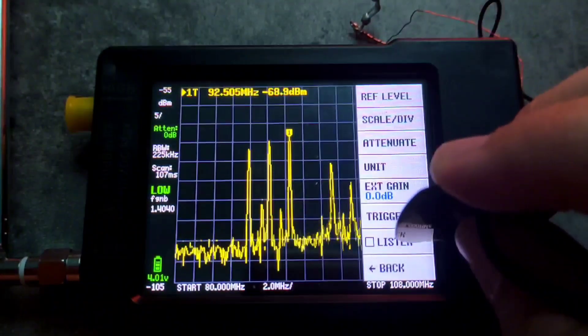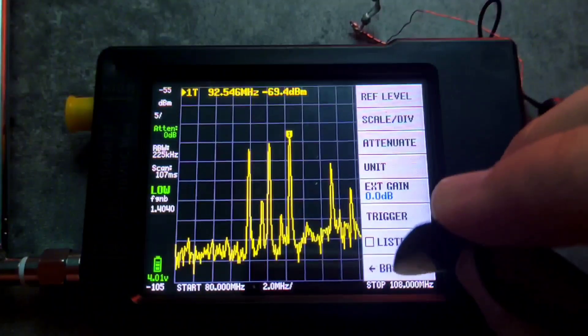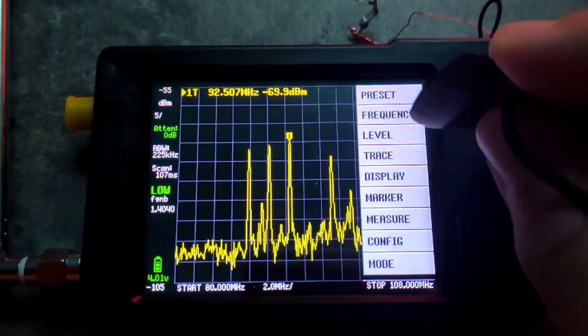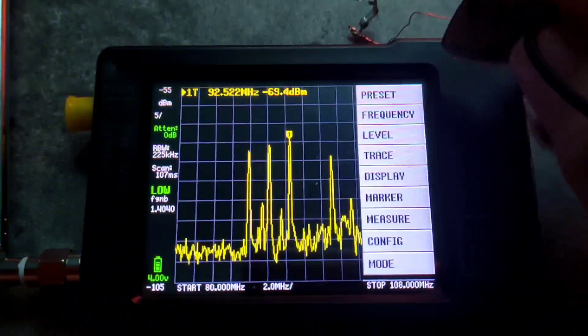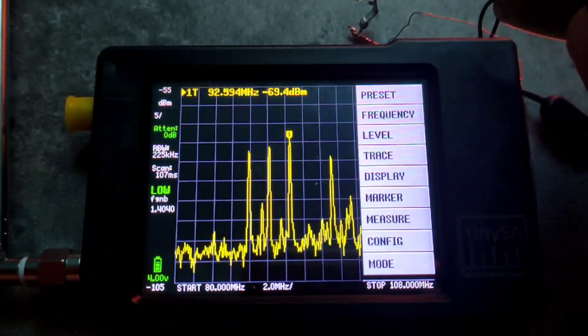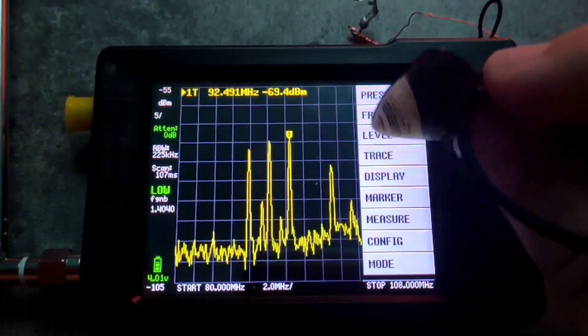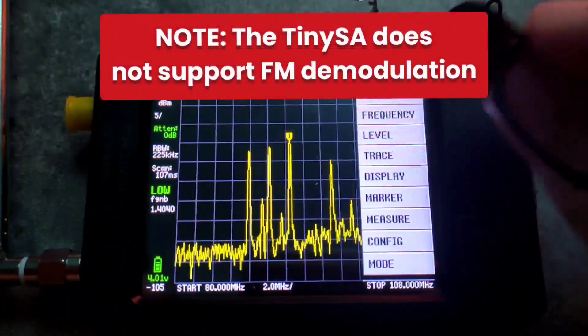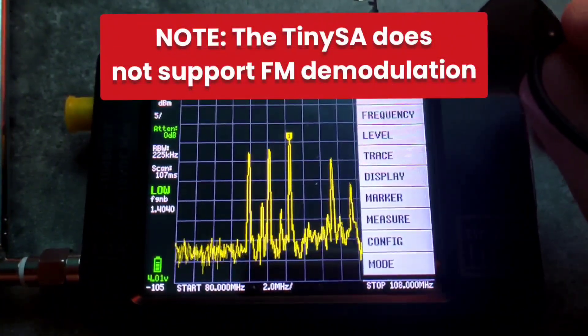There are obviously other functions as well as the listen. The listen function basically allows you through external wires that you solder on to listen to such frequencies. Although, the TinySA does not support FM demodulation.